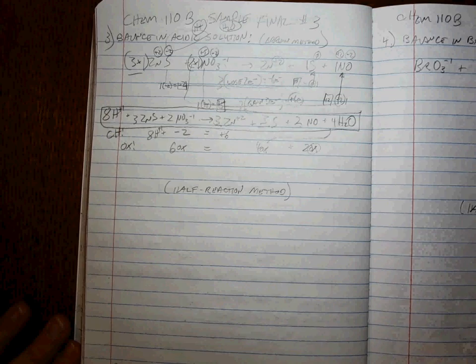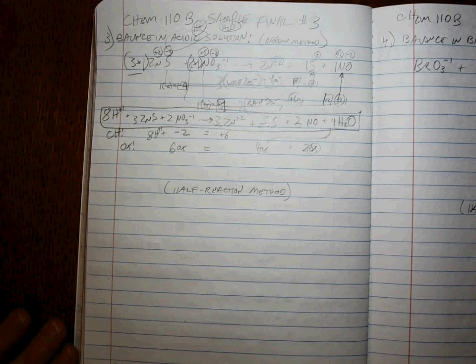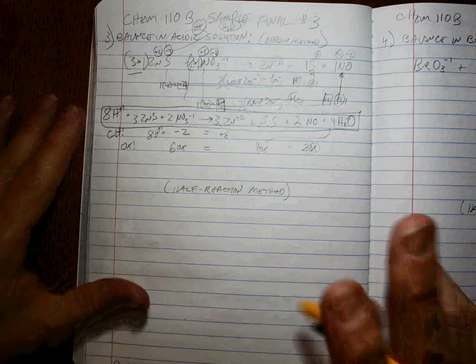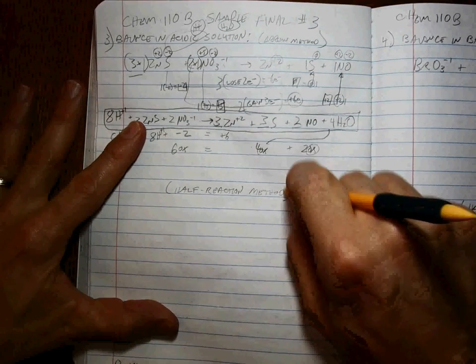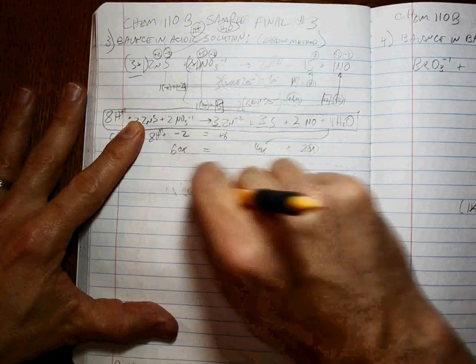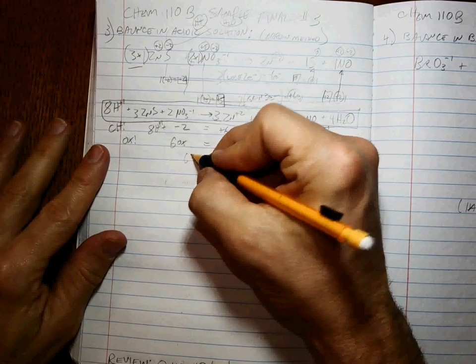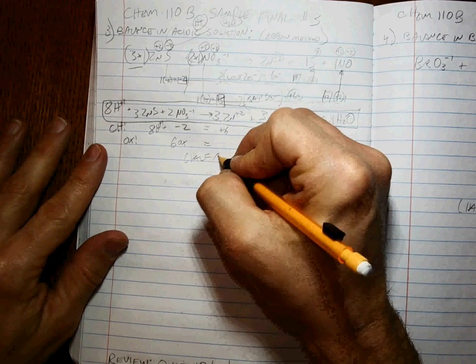You're going to have a hard time convincing me that the half reaction method is quicker. I'm telling you that I have trouble with it. I just think it's a lot faster doing the arrow method. I need a little more room, so I'm going to do the half reaction method.